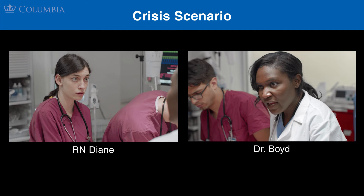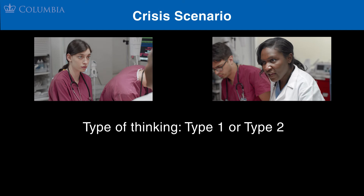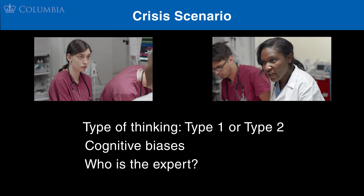We want you to watch this scene and consider the following: What type of thinking is each person employing — type 1 or type 2? What possible cognitive biases are impacting each person? And finally, who is the expert in the room, and what specifically is their expertise? Take notes as you watch. An activity assessing your knowledge of this principle will follow immediately after.